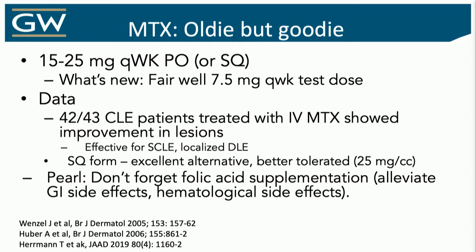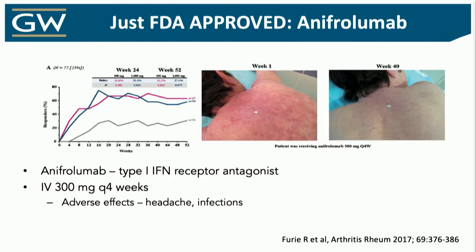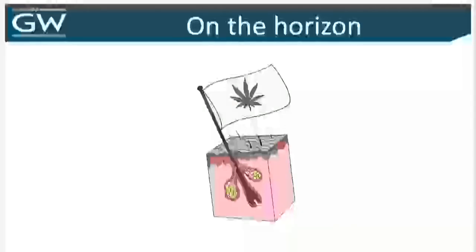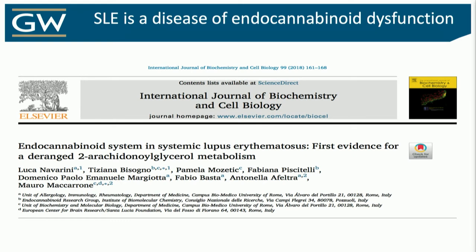Methotrexate — an oldie but goodie, been around forever, with good evidence. Don't forget folic acid supplementation to prevent CBC drops. It's easy because it's once a week. There are some new drugs for SLE — not available to us yet — but for really severe or recalcitrant patients, referral to rheumatology for an infusion center is an opportunity. On the horizon: medical cannabinoids. Lupus may be the first described disease of endocannabinoid system dysfunction, where the enzyme that breaks down cannabinoids is too active.